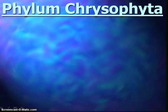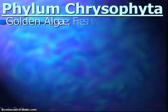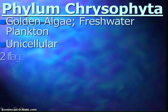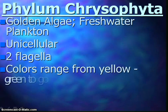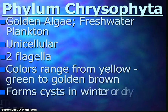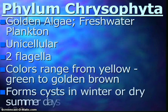The next phylum is the golden algae. These are unicellular, and they have two flagella, both attached near one end. Their colors range from yellow-green to golden brown, depending on the pigments they contain. They are considered freshwater plankton, and what's cool about them is they form cysts in the winter or dry summer days — that's a nice evolutionary advantage.